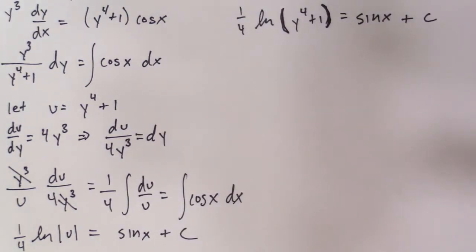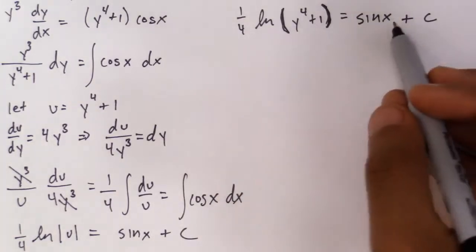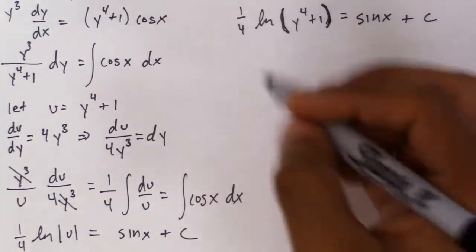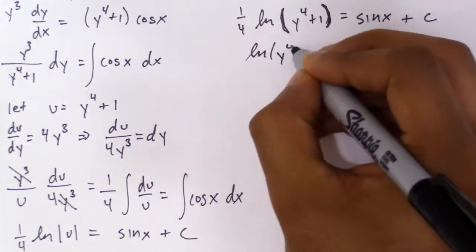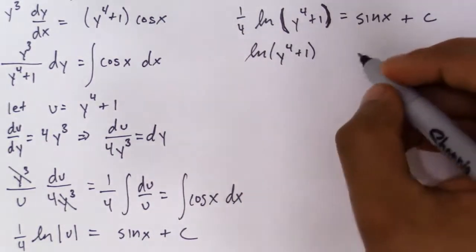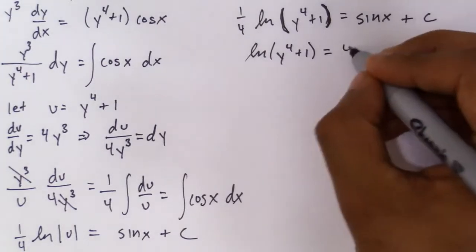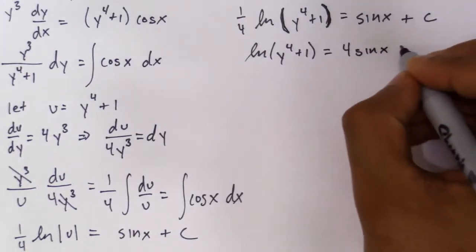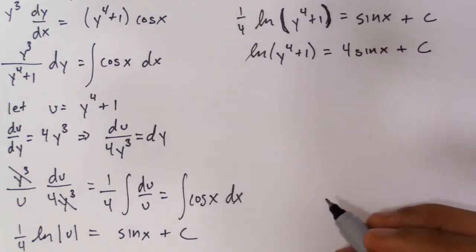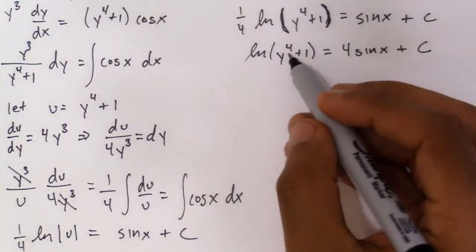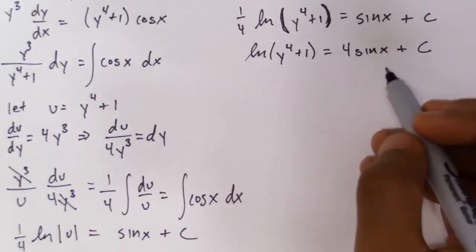Now most teachers or professors would want you to probably solve for a function y(x). So we could do that quite simply. Multiply by 4 on this side and e it. So ln(y⁴+1) equals 4 sin x, and then that number times the constant is just another constant, which I'm going to keep as C.